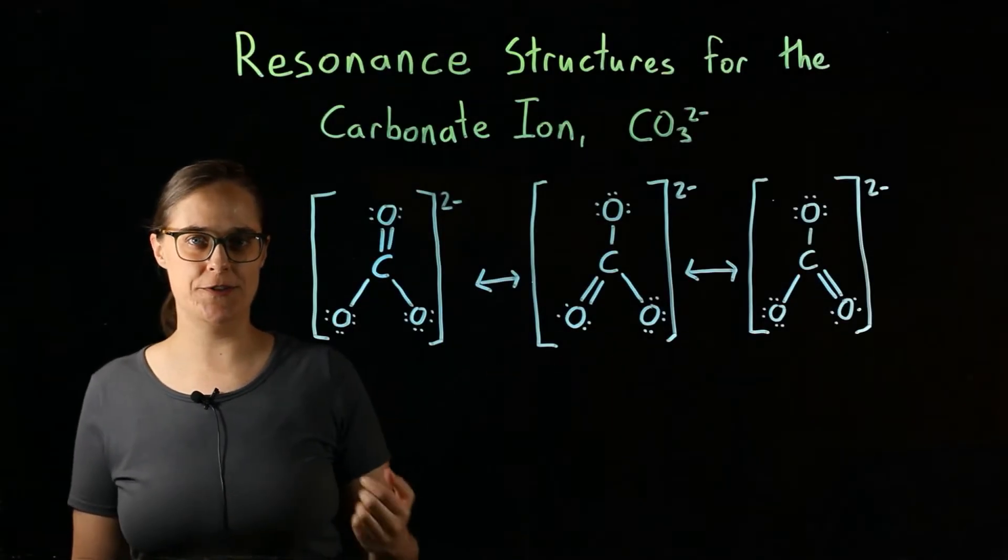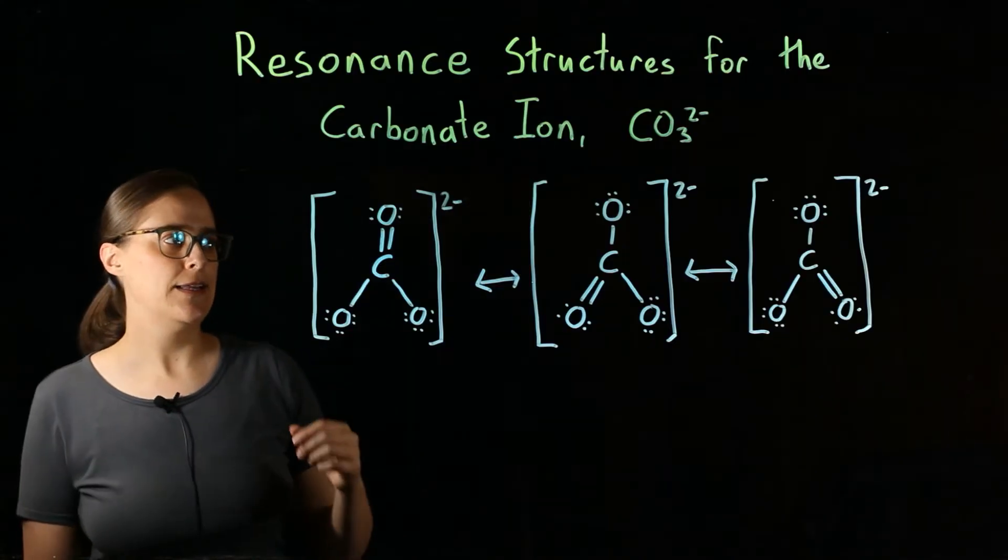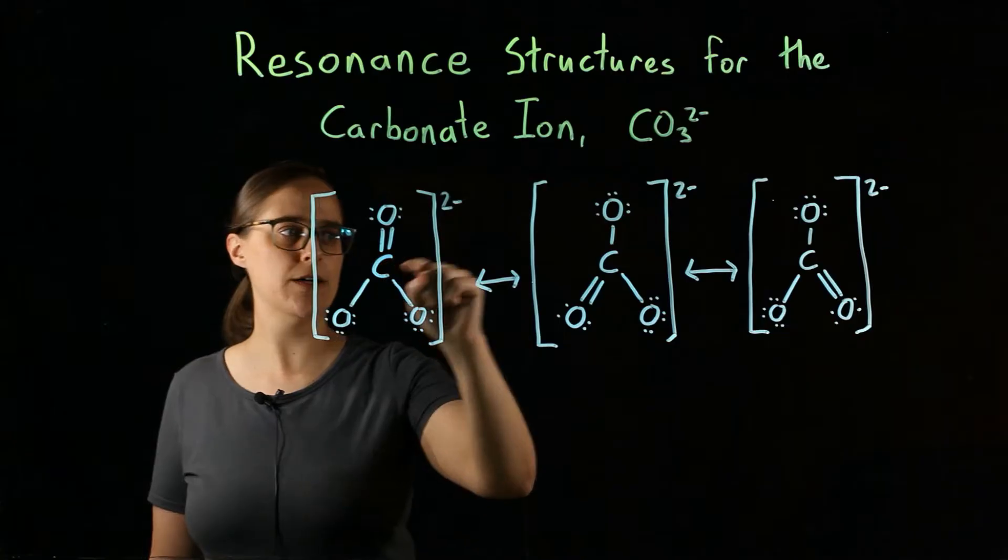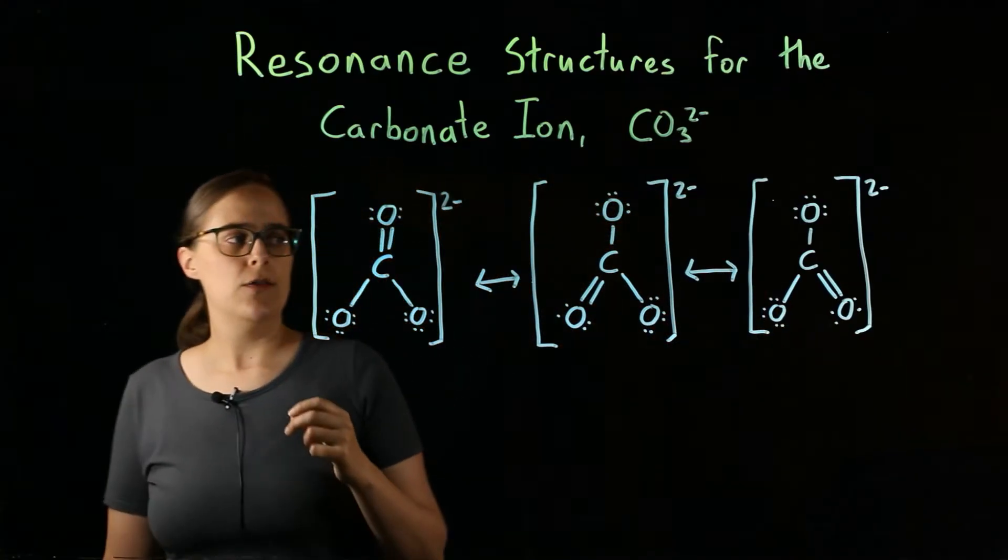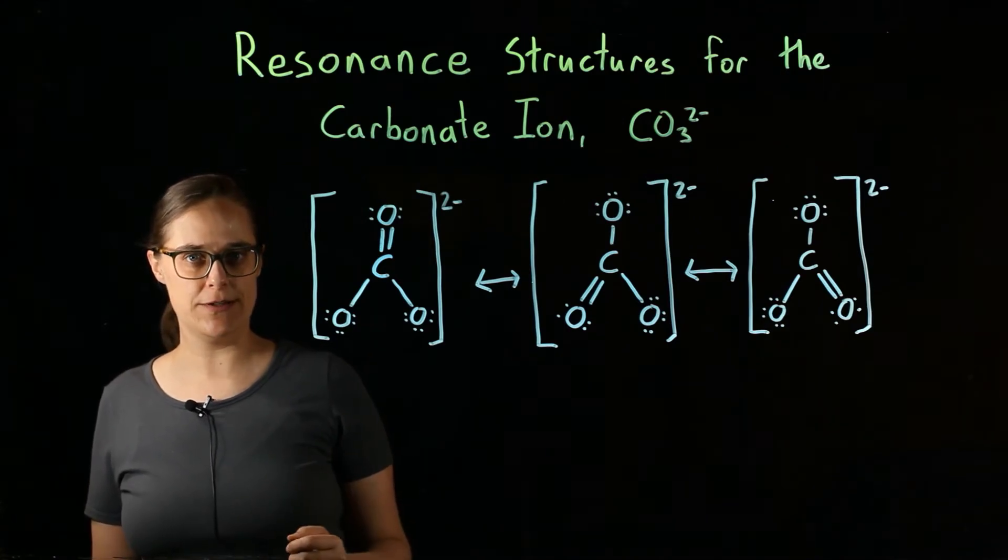These are the three resonance structures for the carbonate ion, CO3^2-. Notice that they all have their atoms in the same locations. Carbon is in the center, bonded to three oxygens. What's different about these structures is the positioning of the electrons.